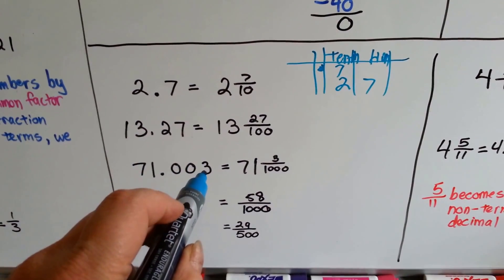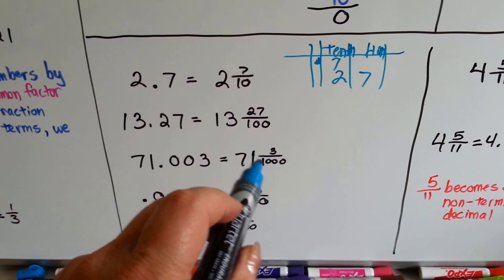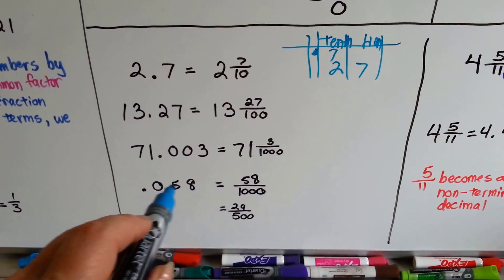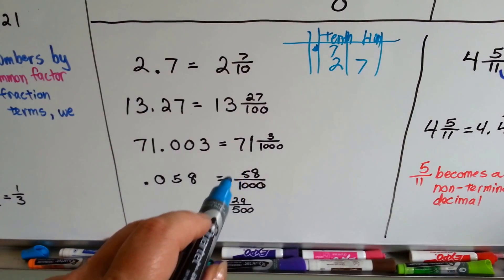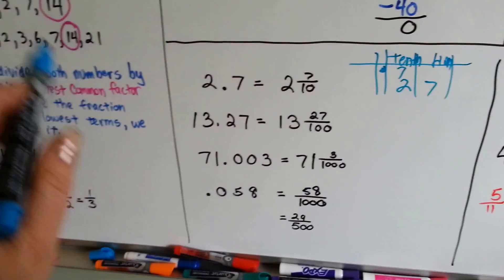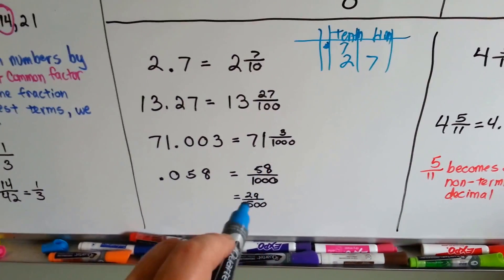71 and 3/1000, we just put a 3 over a thousand. 58 thousandths becomes 58 over a thousand, but it can be reduced to lowest terms. I just cut it in half.